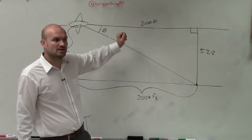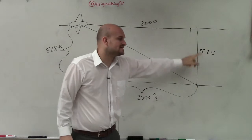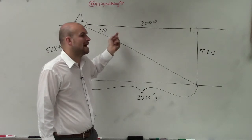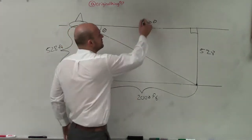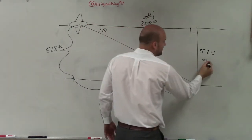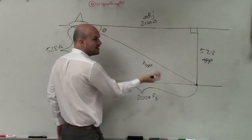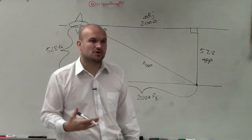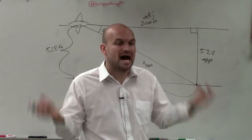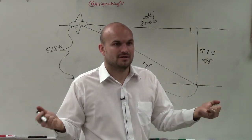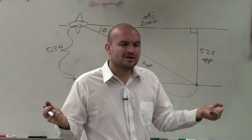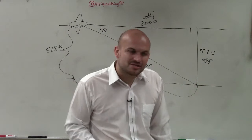Looking at the sides: the 2,000-foot side — Ashley, how is this side related to the angle? Is it the hypotenuse, adjacent, or opposite? Adjacent — very good. And the 528-foot side? Opposite. So then this third side has to be the hypotenuse, which we don't have. The only trigonometric function that deals only with opposite and adjacent is the tangent function.